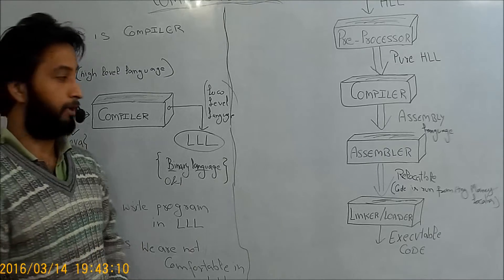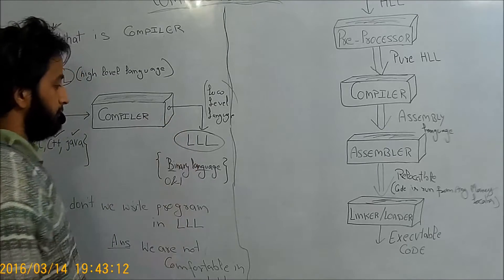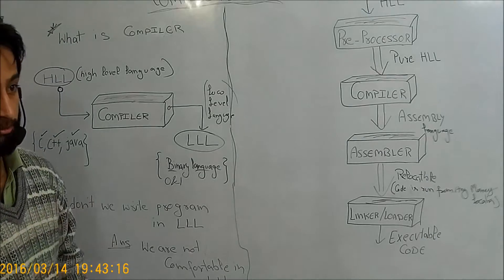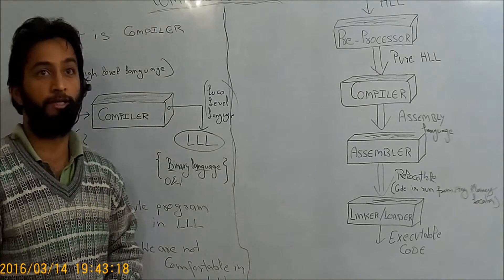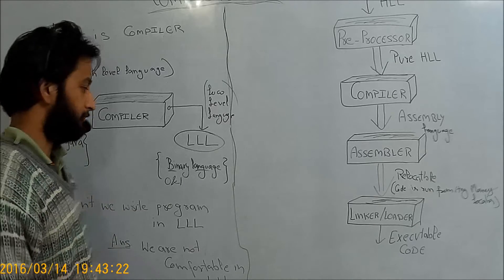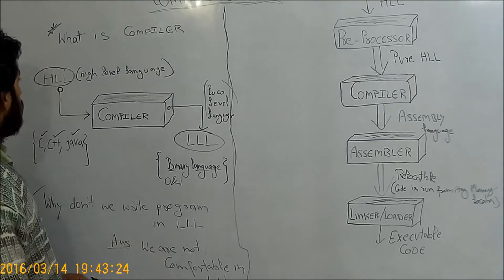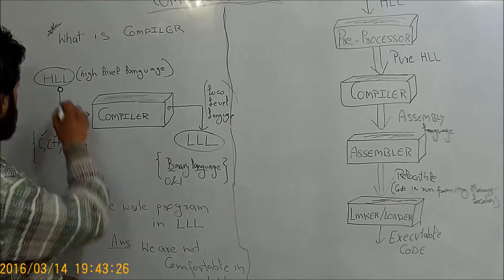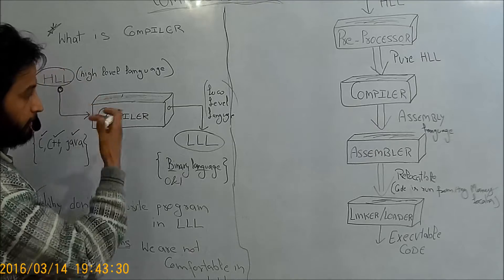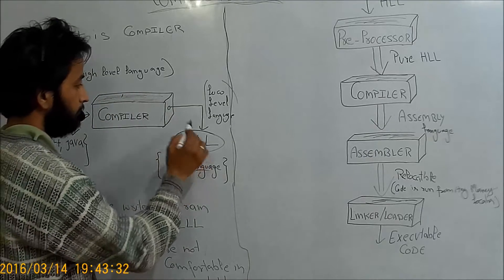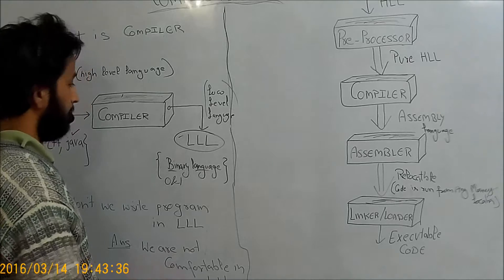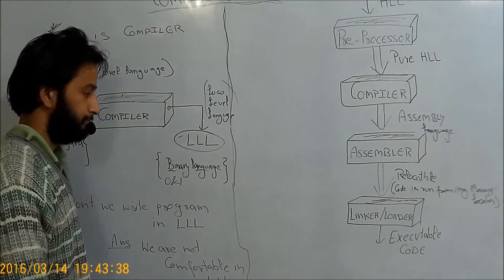So if we are converting our program from high-level language to low-level language, then why don't we write our programs directly in low-level language? The answer is that we are not comfortable writing programs in low-level language or in binary form. That's why we write all our programs in high-level language, and the compiler converts that code to low-level binary language, which is understandable to the computer.